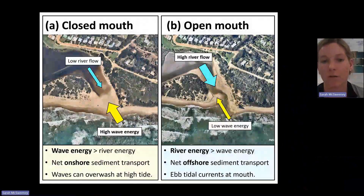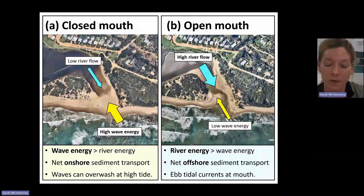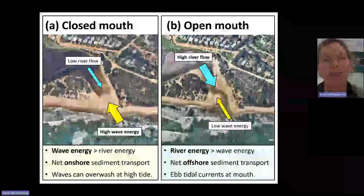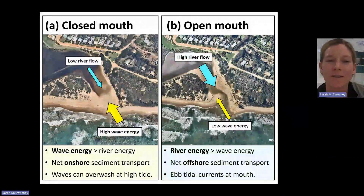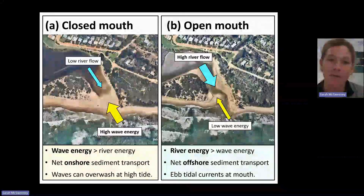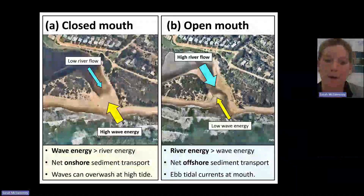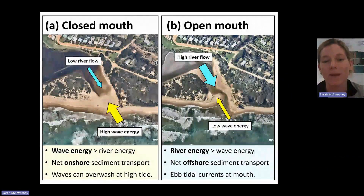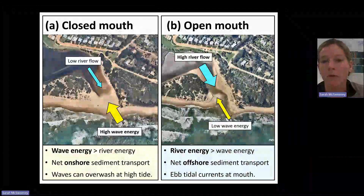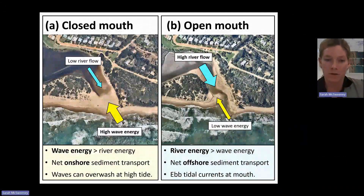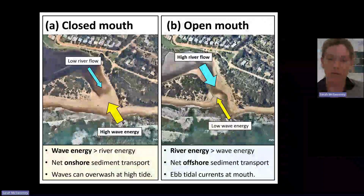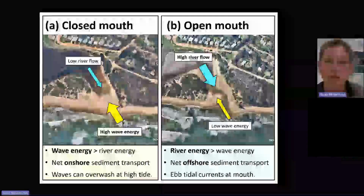I'll give a bit of an overview about entrance processes in these estuaries in general. Whether the mouth is open or closed at its most fundamental form is a function of competing energies. We have river flow and rainfall and runoff from the catchment trying to push through the sandbar at the mouth, and always opposing that is sediment transport onshore by waves. It's really that ratio or balance between whether river flow or waves is winning the battle.